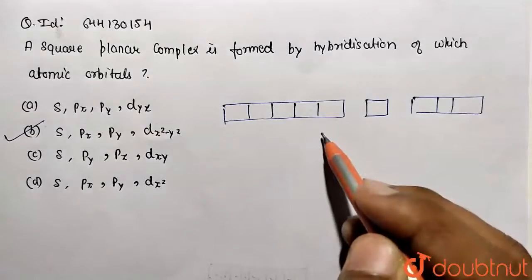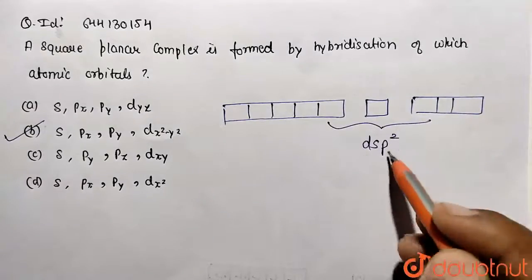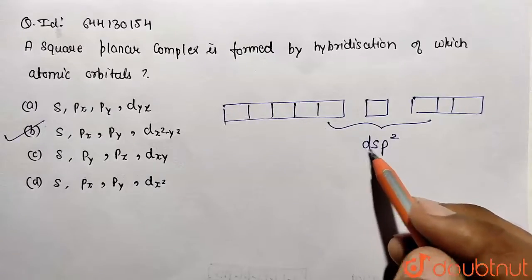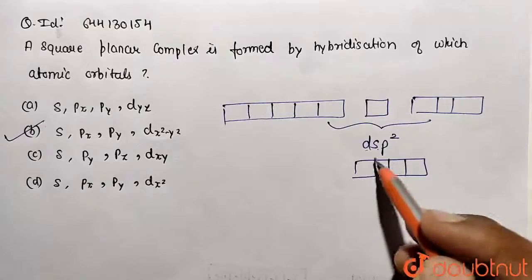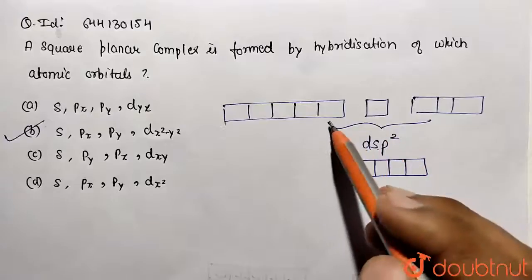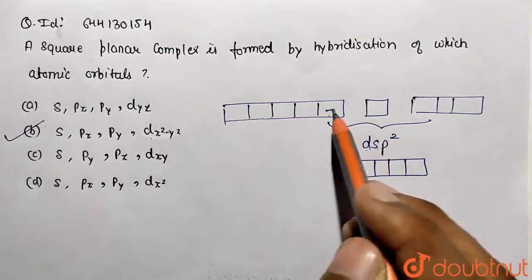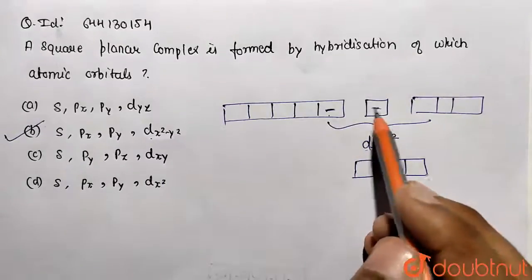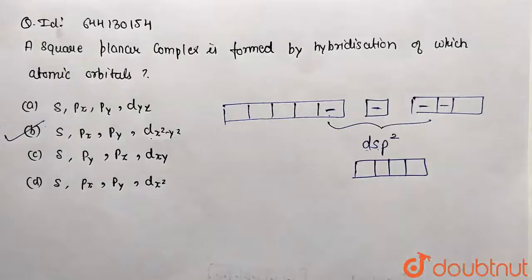Basically the hybridization that is dsp² type will be formed, and dsp² will be giving a total of four hybrid orbitals which are of dsp² type having same energy. Moreover, this will be contributing from dx² - y² orbital, then comes our s orbital, then this is px and py. So this was the contribution and this is our answer.